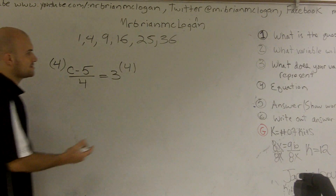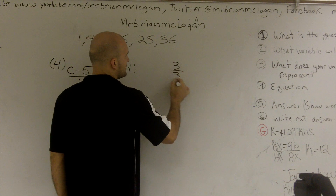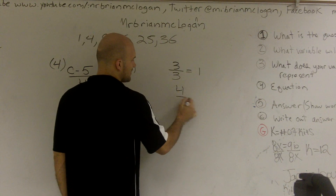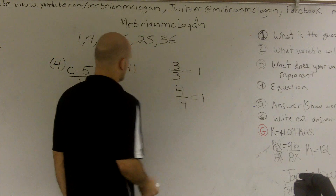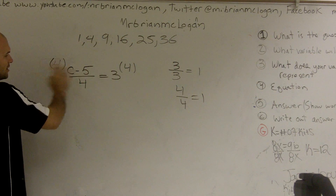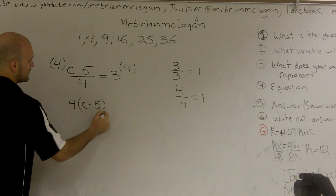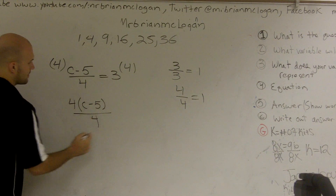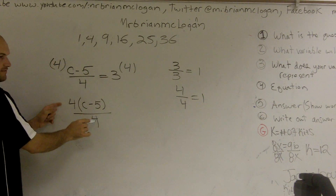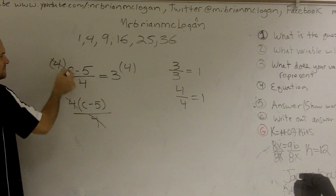Fortunately, you don't need to worry so much about that, because what is 3 divided by 3 going to be? 1, right? So what do you think 4 divided by 4 would be? 1. So you could multiply this across — 4 times c minus 5 over 4. I have 4 divided by 4, so the 4s actually cancel out. I don't actually have to multiply this 4 by anything.